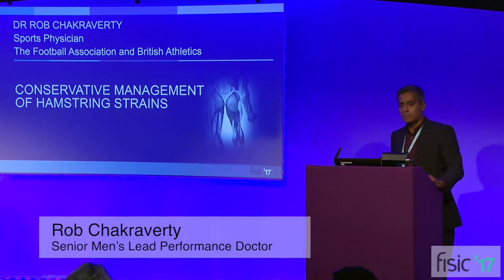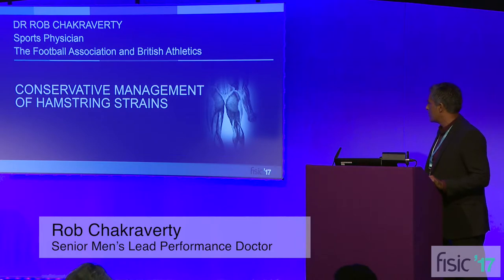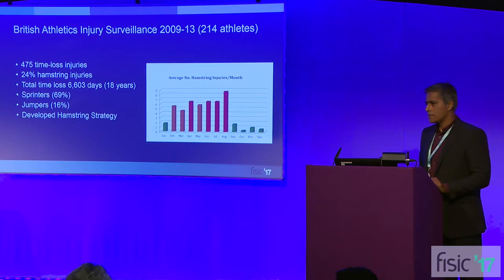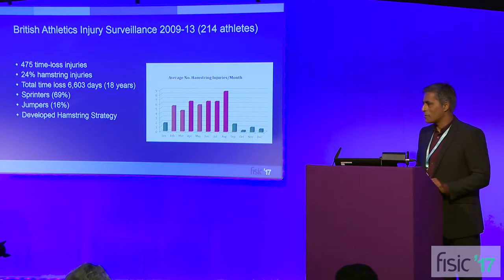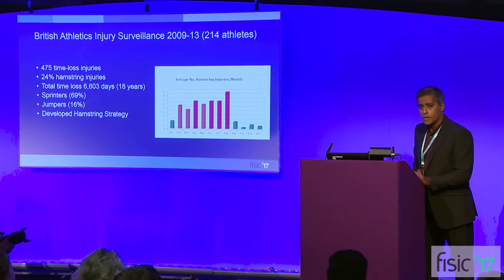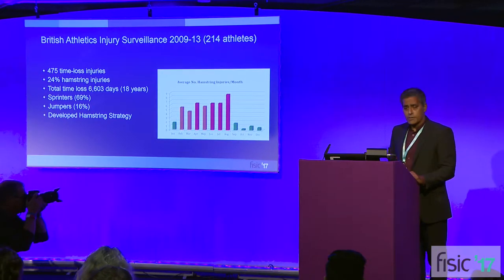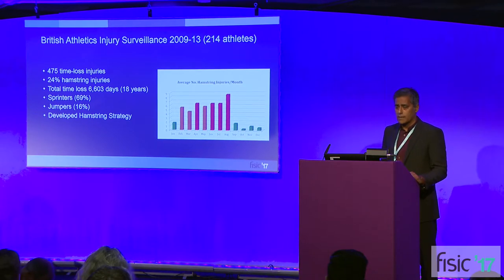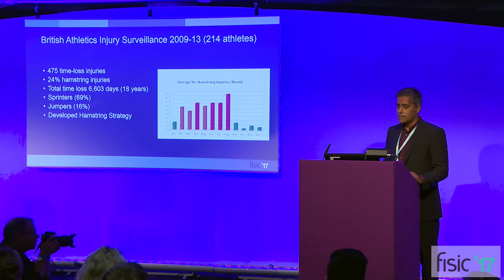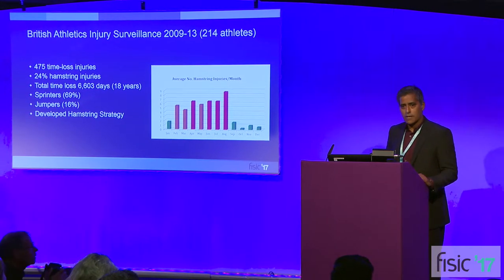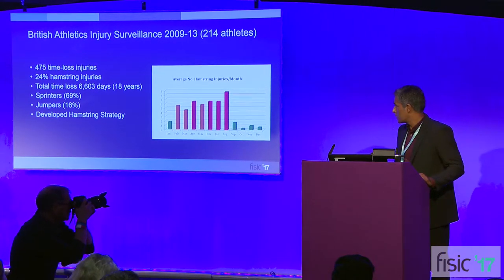I'm going to talk on conservative management of hamstring injuries, mainly around proximal hamstring injuries as this is a posterior hip session. My talk is mainly around my experience with British Athletics, where I worked for the last nine years. We did an injury surveillance report from 2009 to 2013 covering 214 track and field athletes, and we had 475 time-loss injuries, of which 24% were hamstring injuries. Most of these were in sprinters and jumpers, and we realised we had a problem and had to come up with a strategy.